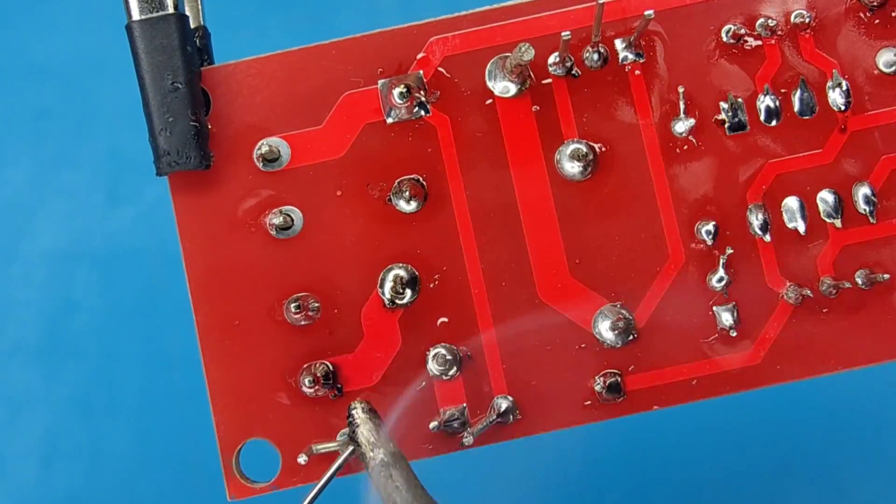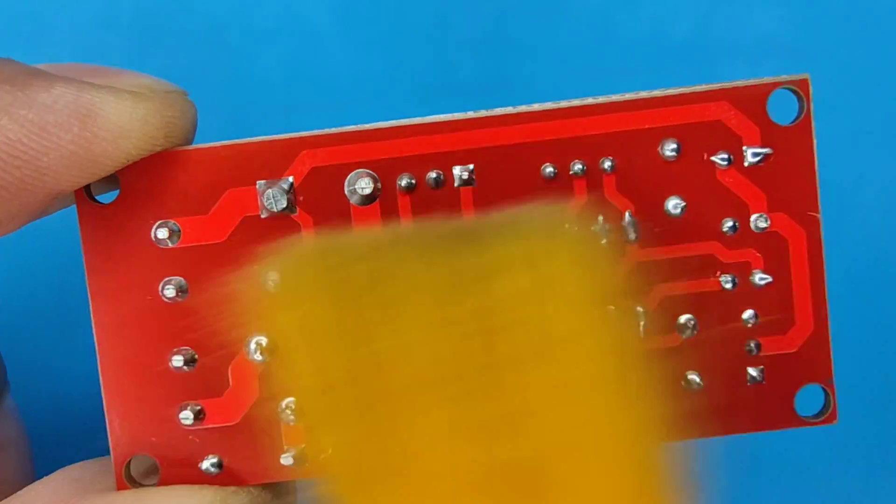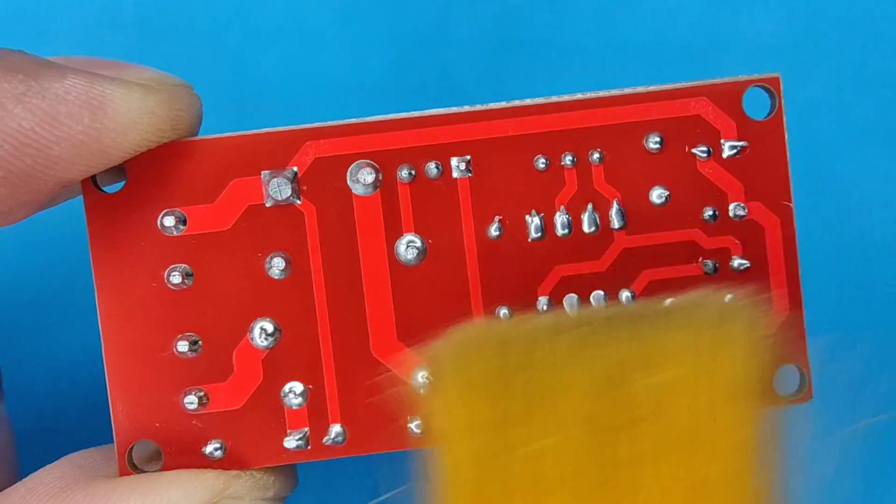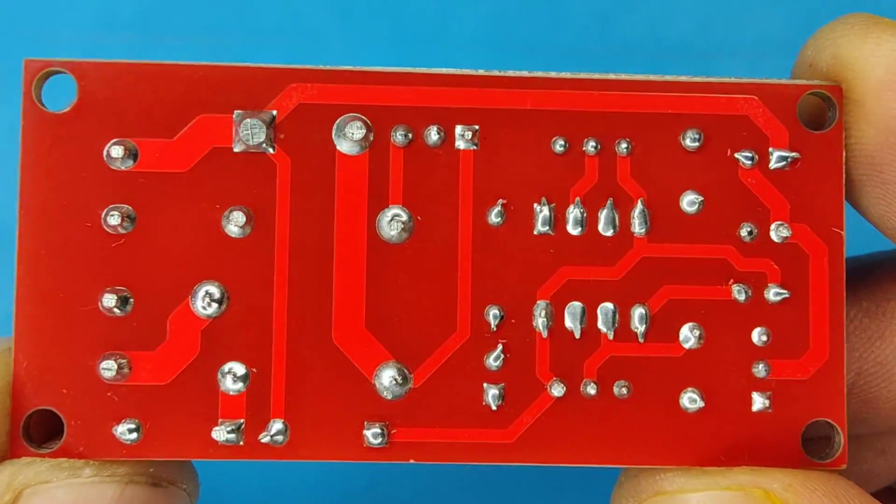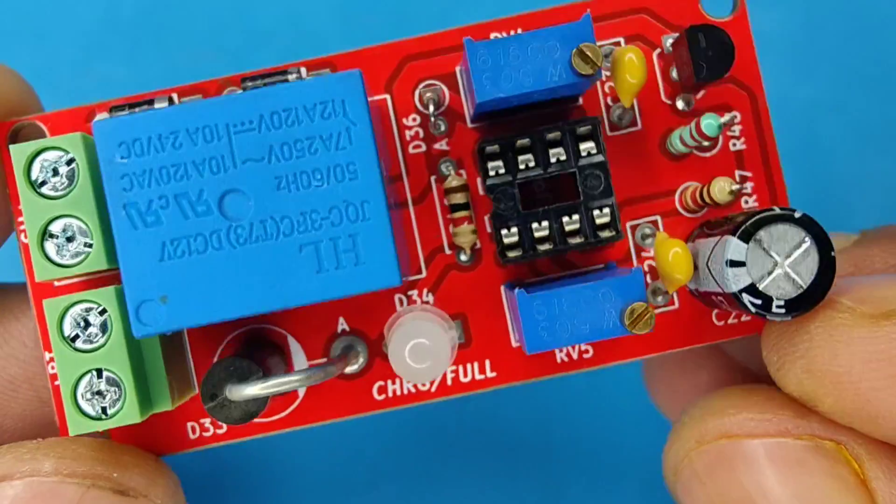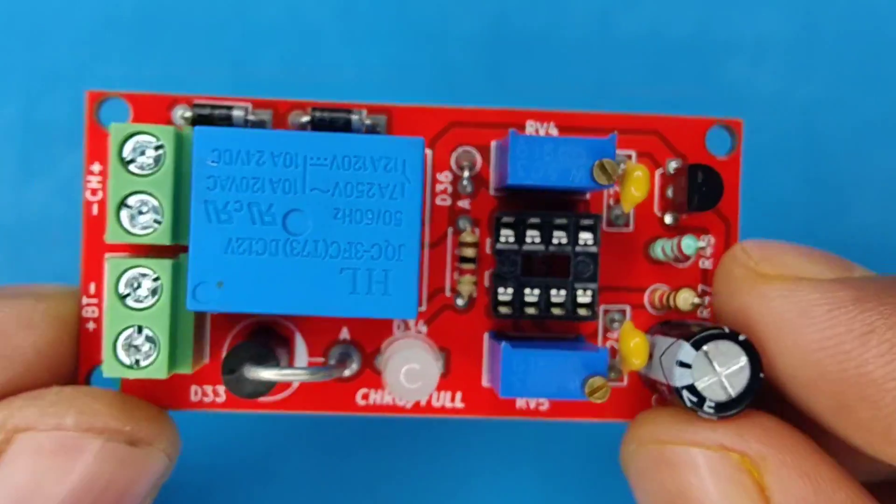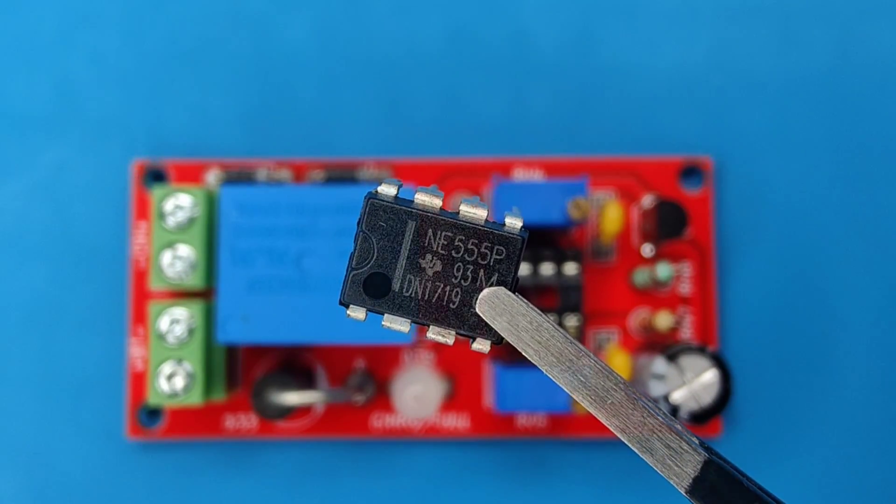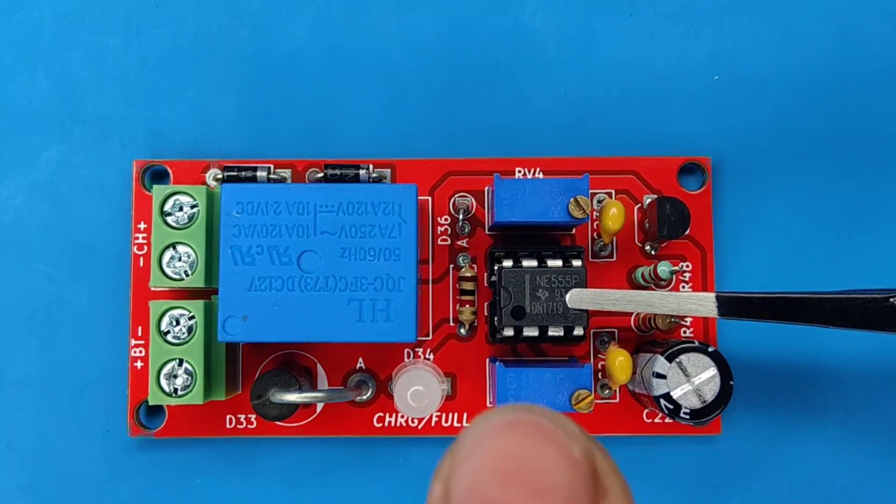After spending some time with the soldering process, I clean the PCB with isopropyl alcohol. And here our PCB is looking nice and clean. Now take a 555 timer IC and install it in IC base.